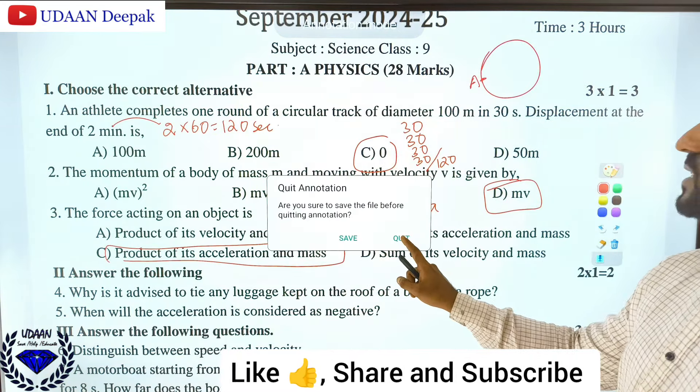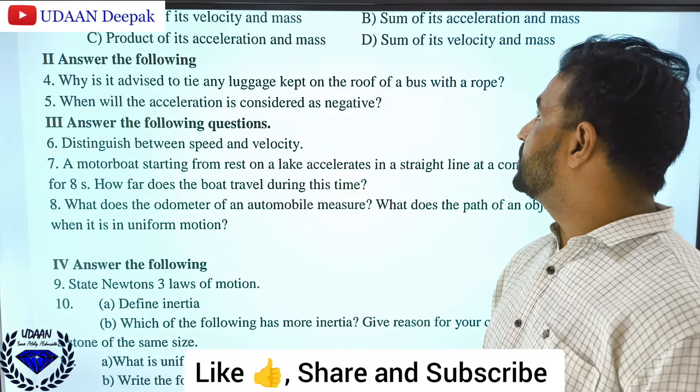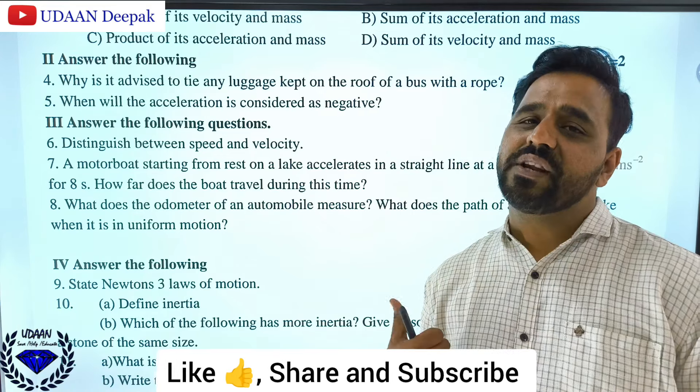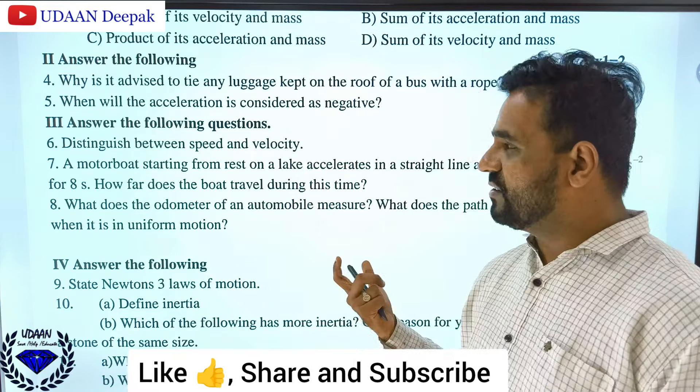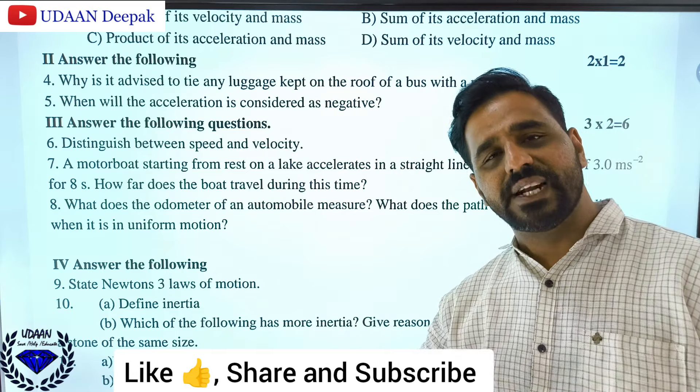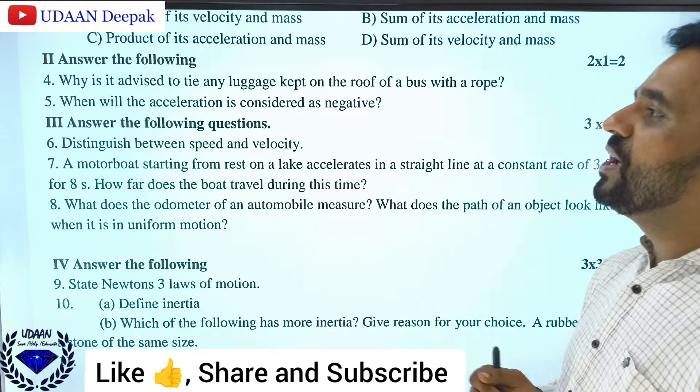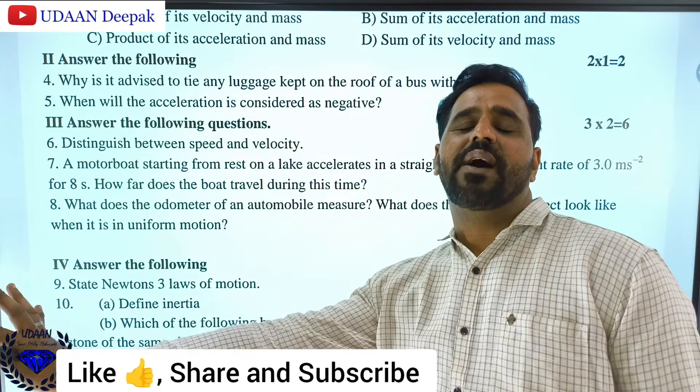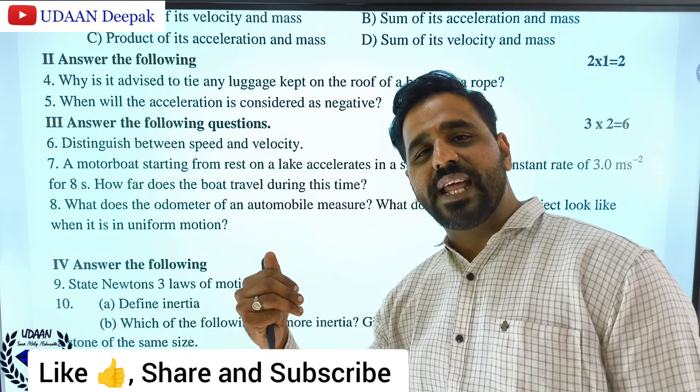Why is it advised to tie any luggage kept on the roof of a bus with a rope? Because of inertia. In order to overcome the inertia, we need to tie the bag, otherwise the bag will fall when suddenly the brake is applied or the bus is started. Acceleration is considered negative when the applied force is opposite to the direction of motion.